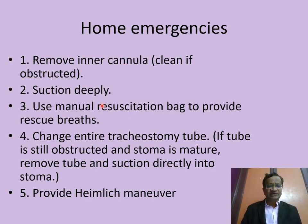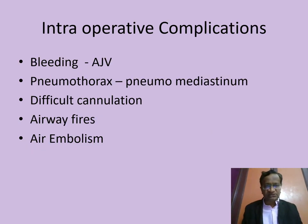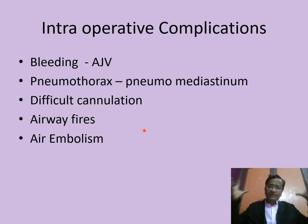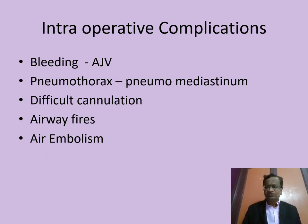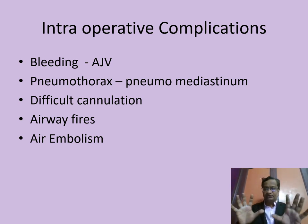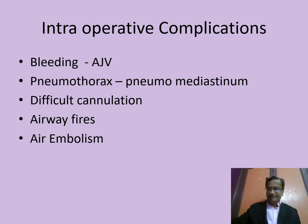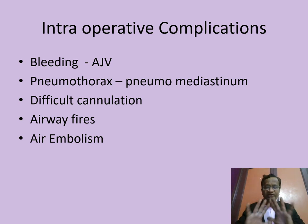For home emergencies: remove the inner cannula, suction deeply, use a manual resuscitation bag, and if in doubt, change the tracheostomy tube. Intraoperative complications include: bleeding from the anterior jugular vein, pneumothorax, pneumomediastinum, difficult cannulation, airway fires if high oxygen is being delivered during the procedure, and air embolism. As soon as the tracheostomy tube is inserted, do not remove the endotracheal tube immediately — connect the tracheostomy to the ventilator, check the capnograph, check airway pressures, confirm ventilation is adequate before removing the ETT.